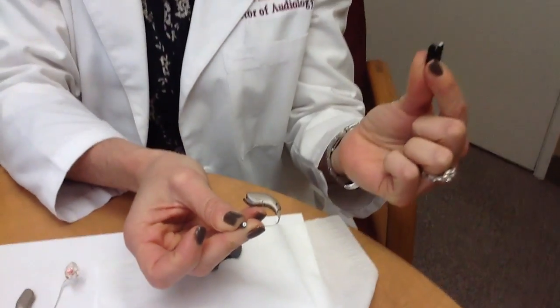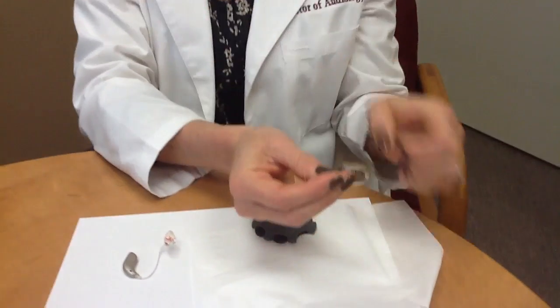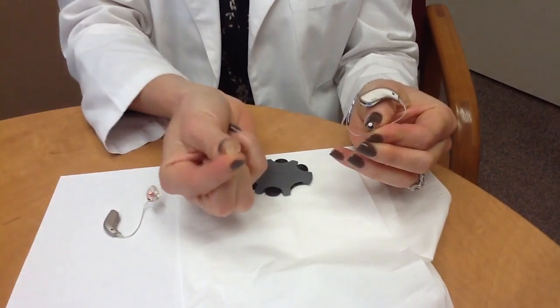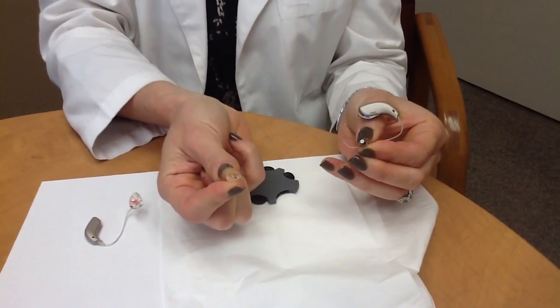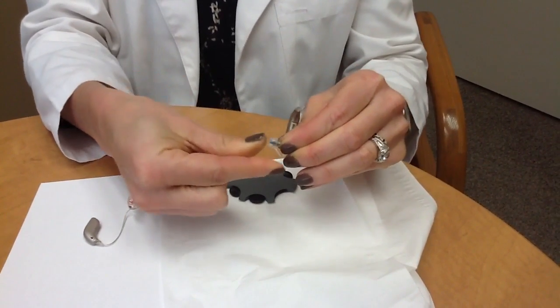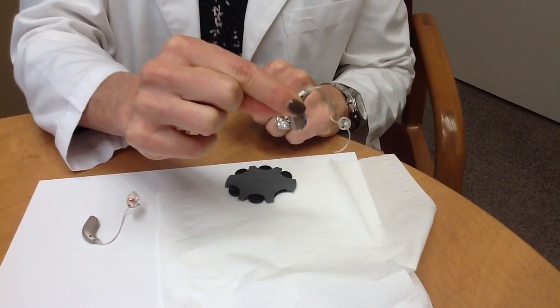Again, you want to throw away the old wax guard. Now you want to put the dome of the hearing aid back on to the end of the receiver. You simply line it up in the middle and push it all the way on. And now you've changed that wax guard.